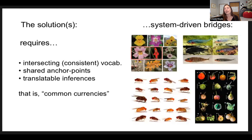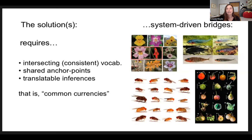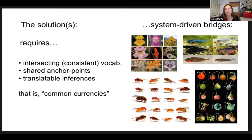One of these common currencies is to use system-driven bridges. It's actually relatively straightforward to have a common currency, a consistent vocabulary, anchor points, and inferences when all of the studies across different levels are focused on a single system. We have lots of great system-driven bridges between micro and macro evolution in speciation research — some of them pictured here. We have Mimulus, Stickleback, the lovely Drosophila, and somewhat unmodestly I've put my own favorite system up there, the nightshades.